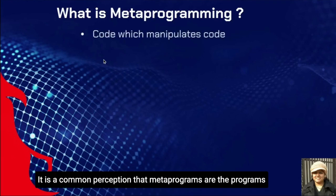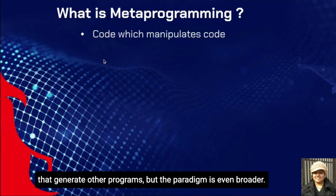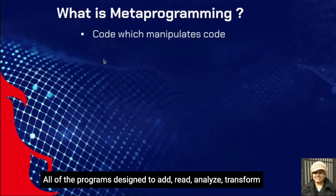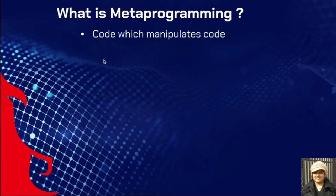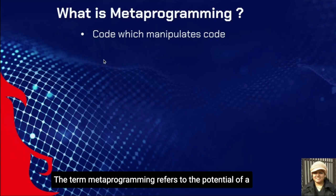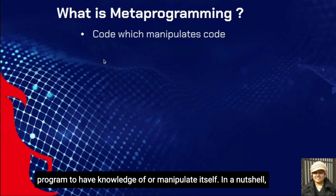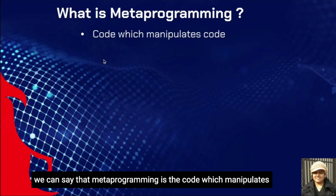It is a common perception that metaprograms are programs that generate other programs, but the paradigm is even broader. All programs designed to read, analyze, transform, or modify themselves are examples of metaprogramming. The term metaprogramming refers to the potential of a program to have knowledge of or manipulate itself. In a nutshell, metaprogramming is code which manipulates code.